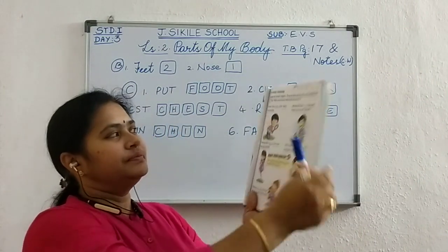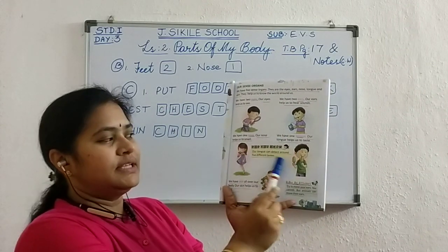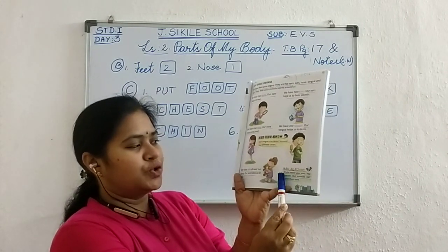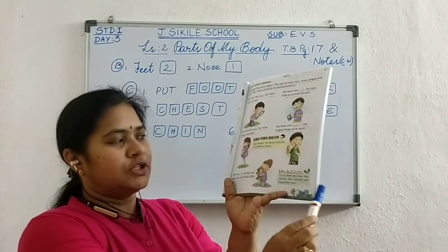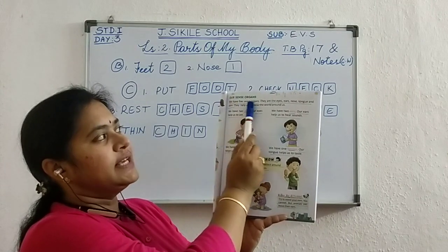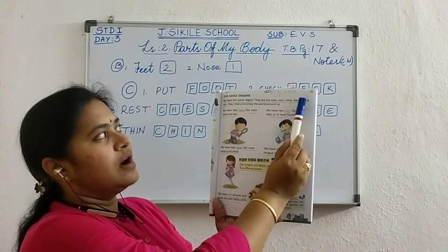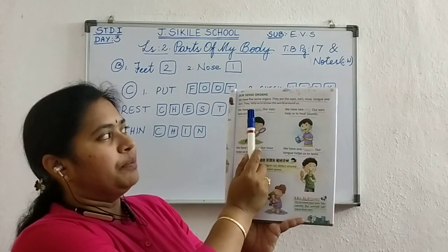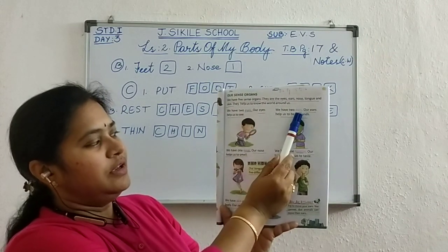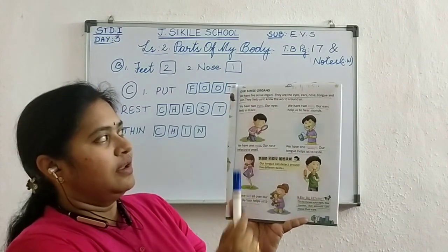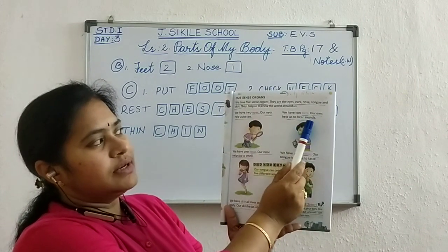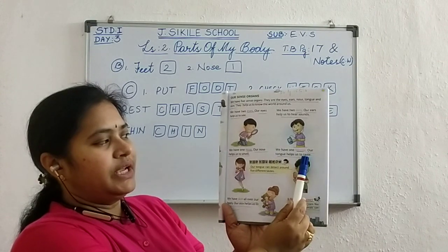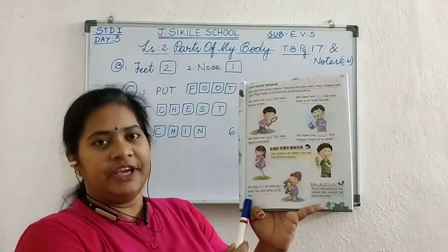Now come this side. This yellow color box — underline it fully, it's important. 'Our tongue can detect around five different tastes.' Also underline: 'Animals can move their ears.' Now: we have five sense organs — they are the eyes, ears, nose, tongue and the skin. Underline this first line fully up to skin — important point. Underline the pink color things: eyes, ears, nose, tongue and skin. Eyes help us to S-E-E; ears help us to H-E-A-R; S-M-E-L-L, smell; T-A-S-T-E, taste; F-E-E-L, feel.